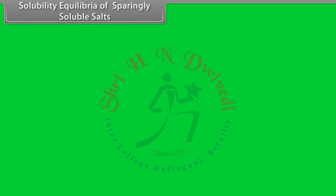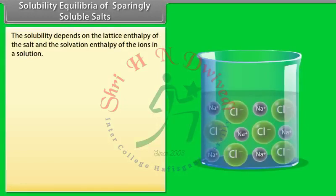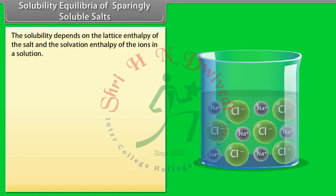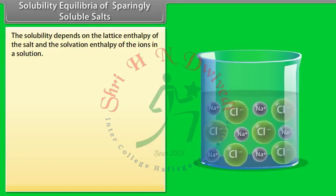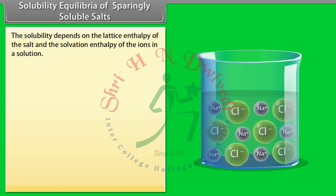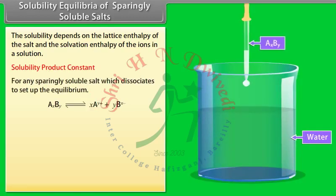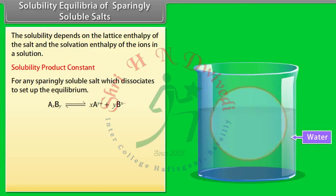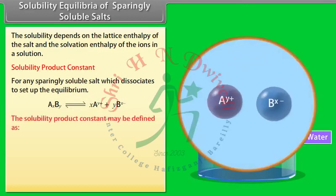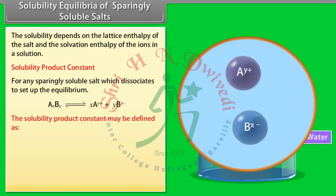The solubility of a salt depends on the lattice enthalpy of the salt and the solvation enthalpy of the ions in solution. For any sparingly soluble salt which dissociates to set up equilibrium, a solubility product constant Ksp can be defined.